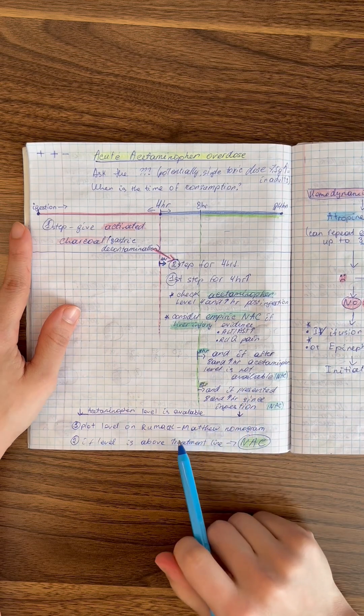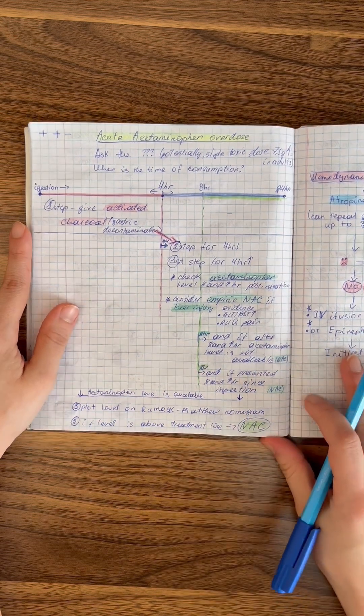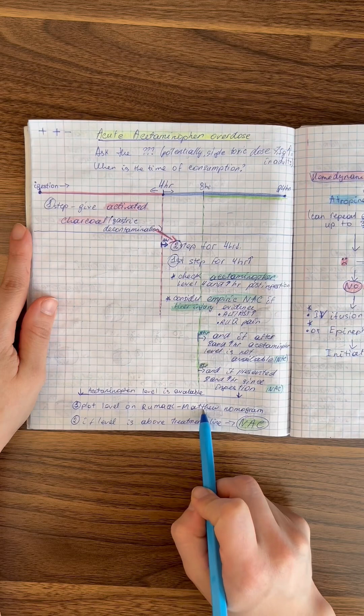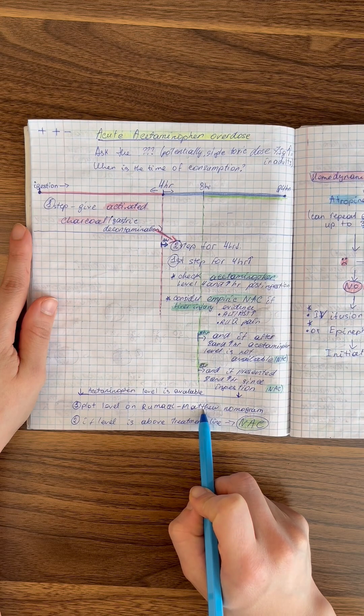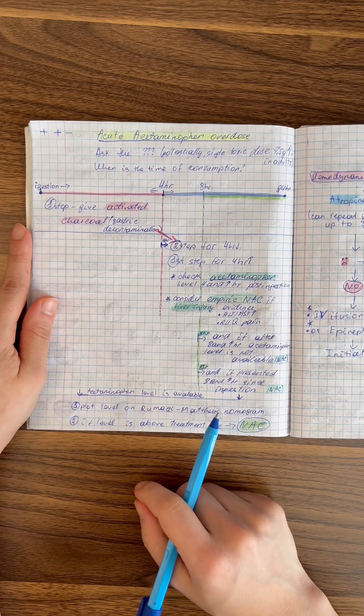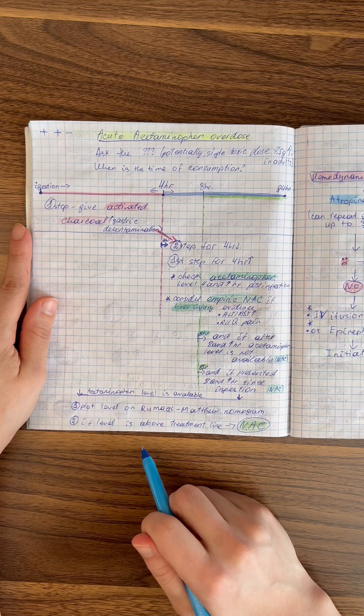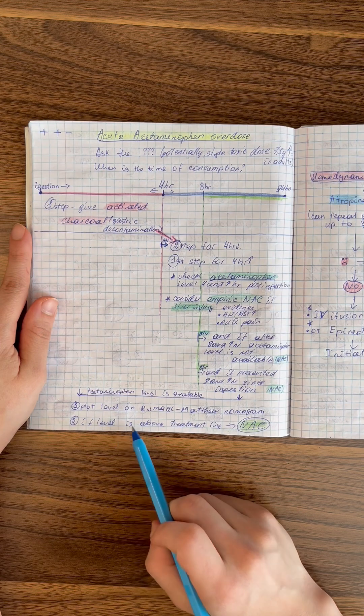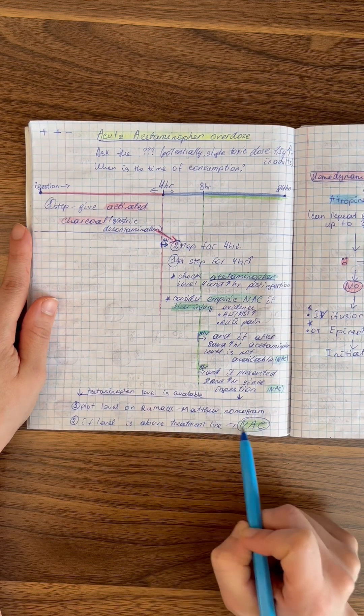When the acetaminophen levels come back, we need to plot the level on the Remag-Matthew nomogram. It is a nomogram where we place the numbers we got and do the plotting. This is used to guide treatment with NAC. If the level is above the treatment line, we need to give NAC.